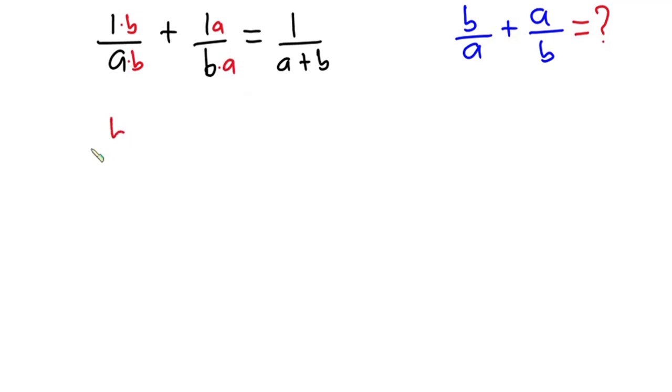So we have b over ab plus a over ab, and this is equal to 1 over a plus b.